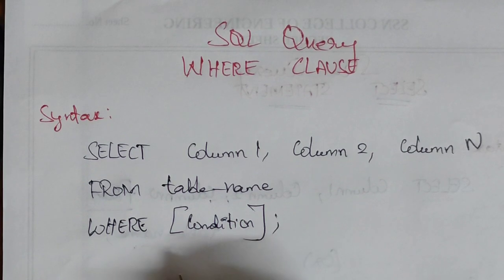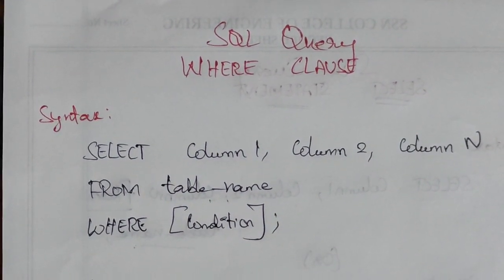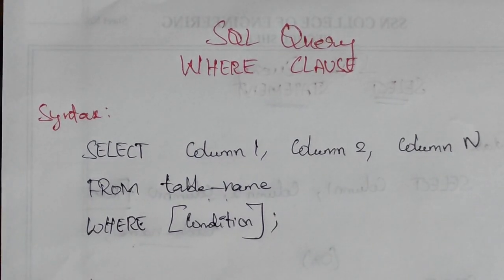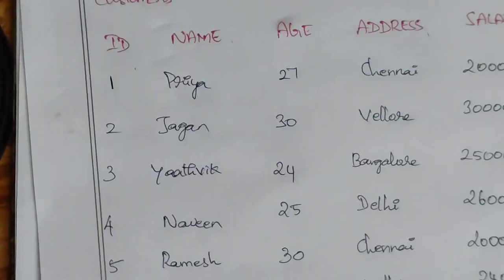WHERE is the condition. The values that satisfy this condition will be selected and displayed. That's the meaning of WHERE clause. In the given table, only the values that satisfy the condition will be displayed.